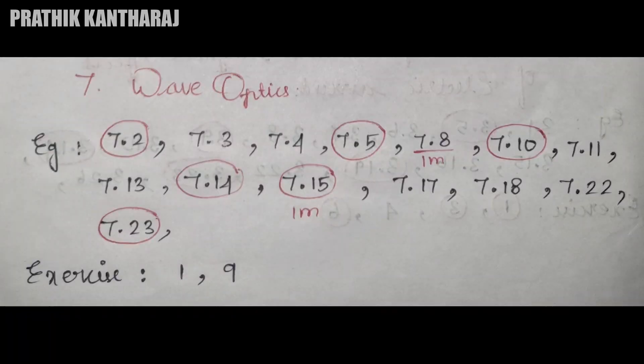And chapter 7 examples: 7.2, 3, 4, 5, 7.8, 10, 11, 13, 14, 15, 17, 18, 22, and 23.